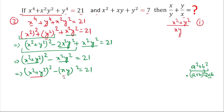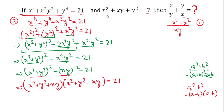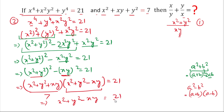Using the formula a² - b² = (a + b)(a - b), we write (x² + y² + xy)(x² + y² - xy) = 21. We already know that x² + xy + y² = 7, so the other factor (x² + y² - xy) = 21 ÷ 7 = 3.